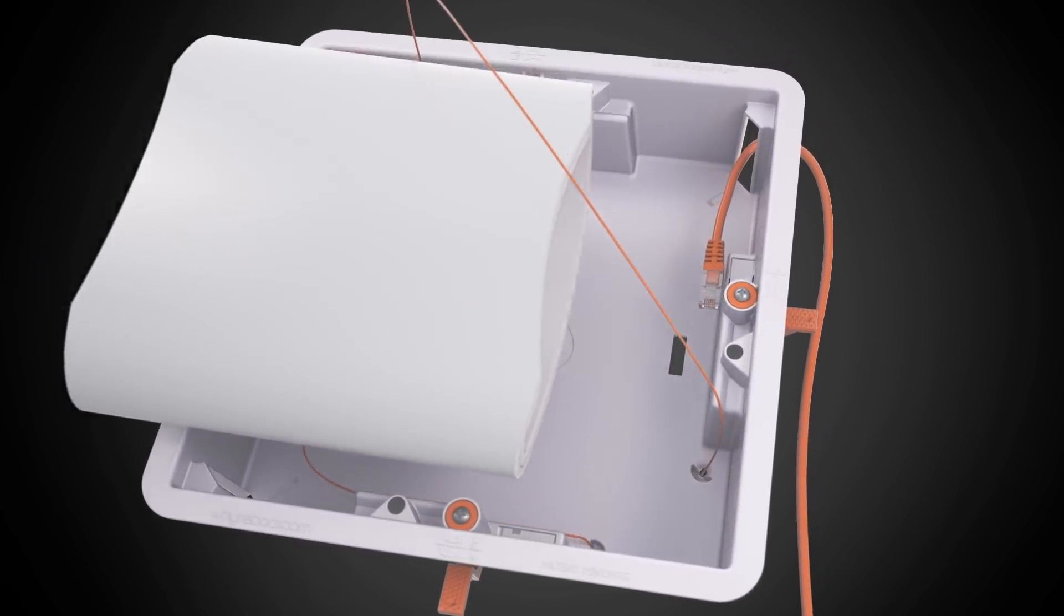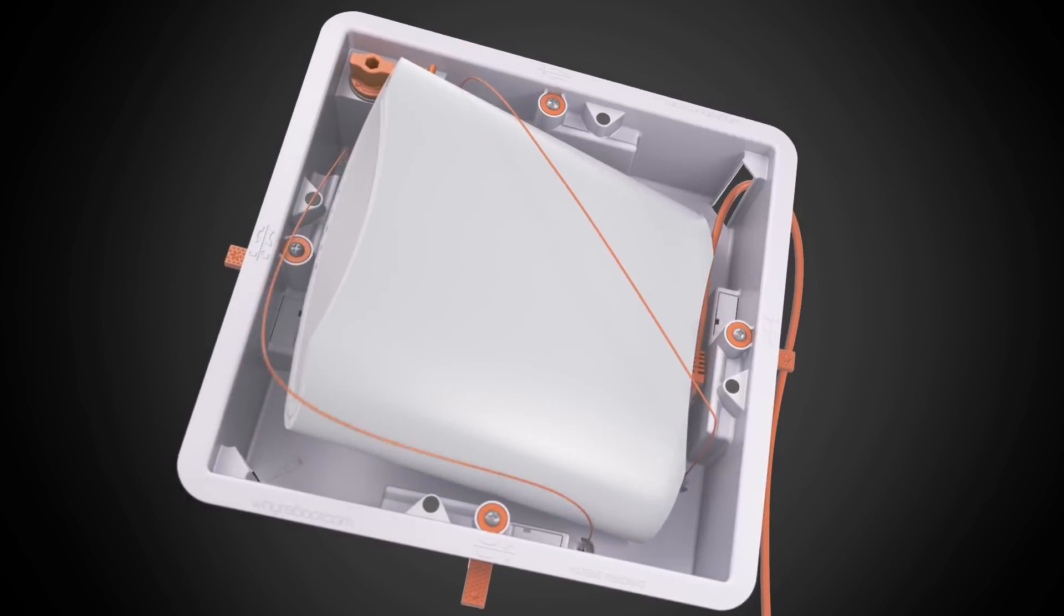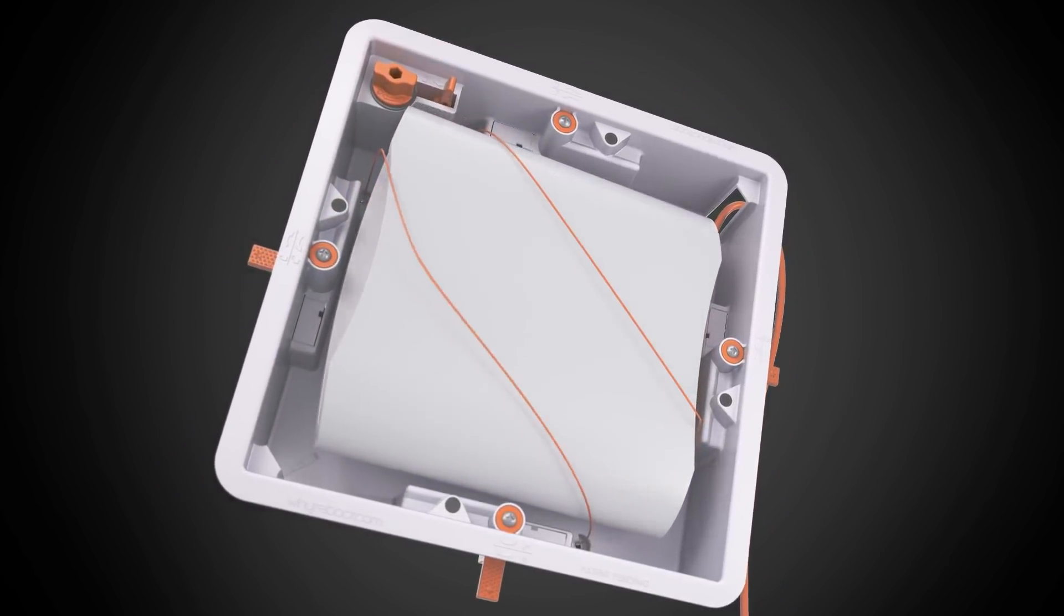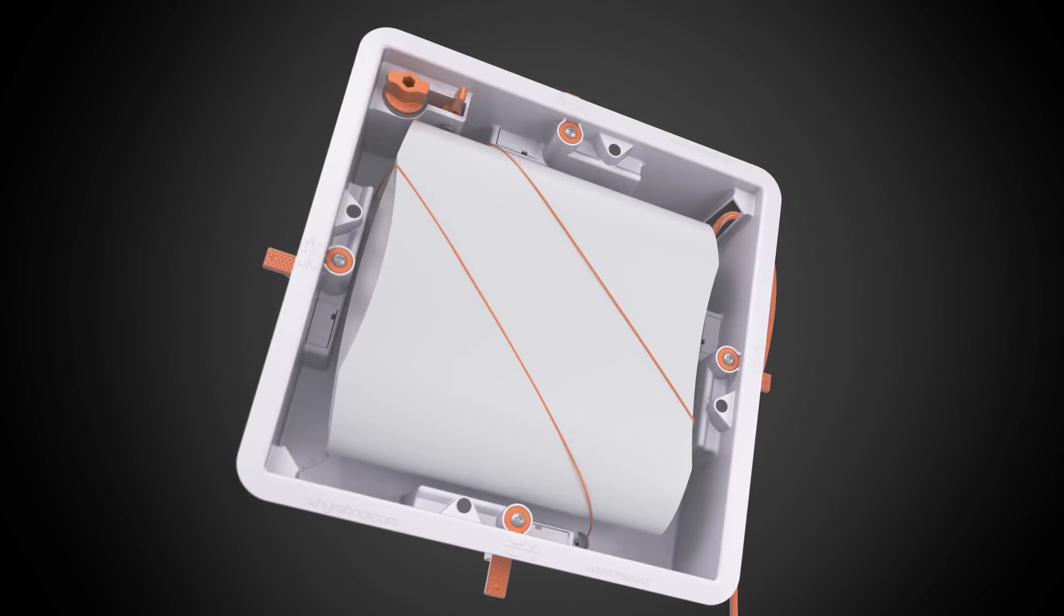Pull the Ethernet cable underneath the first orange cord. Plug it into your access point and place the AP underneath the first cord, then the second.